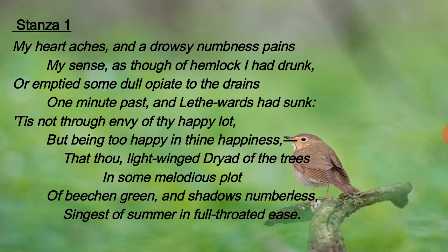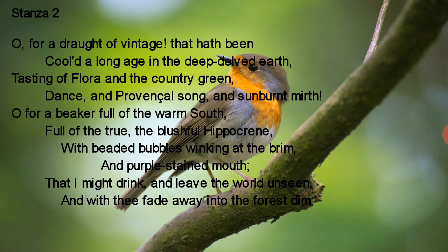Just imagine the poem takes place at the peak of summer. Second stanza: 'O for a draught of vintage that hath been cooled a long age in the deep-delved earth, tasting of Flora and the country green, dance, and Provençal song, and sunburnt mirth. O for a beaker full of the warm South, full of the true, the blushful Hippocrene, with beaded bubbles winking at the brim, and purple-stained mouth, that I might drink and leave the world unseen, and with thee fade away into the forest dim.' Here the poet desires to leave the world.